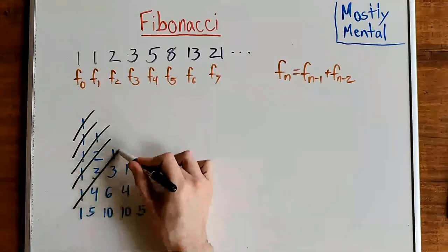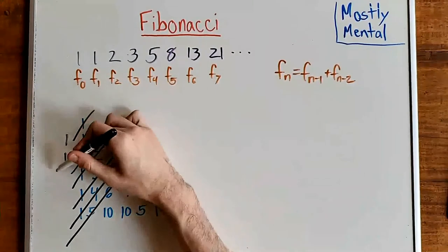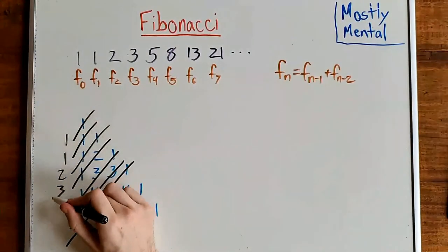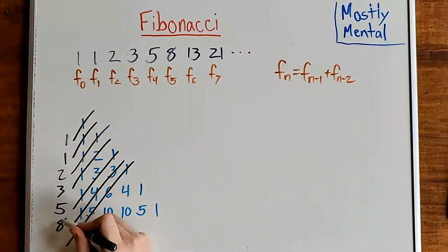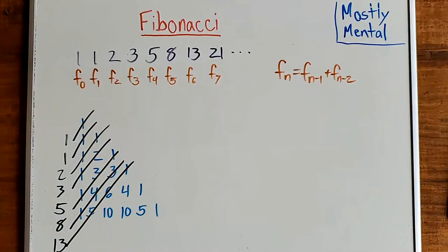we get 1, 1, 2, 3, 5, 8, 13, and the rest of the Fibonacci sequence. But why?